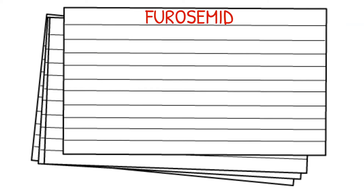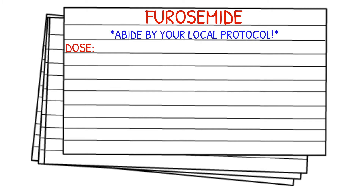As always, please abide by your local protocol and know it very well. Especially with furosemide, protocols vary from state to state, county to county, and area to area. Your adult dose is going to be 0.5 to 1 milligram per kilogram over 2 minutes, and if the patient is currently on Lasix, double the initial dose to 2 milligrams per kilogram over 2 minutes. The pediatric dose is going to be 1 milligram per kilogram over 2 minutes.